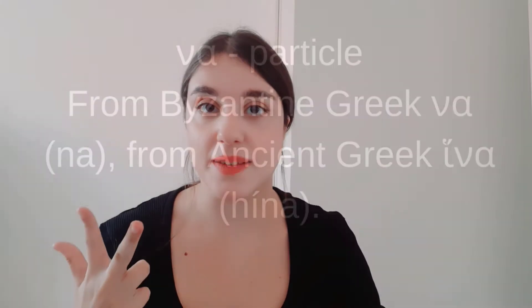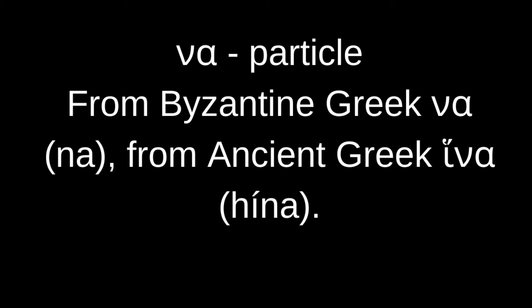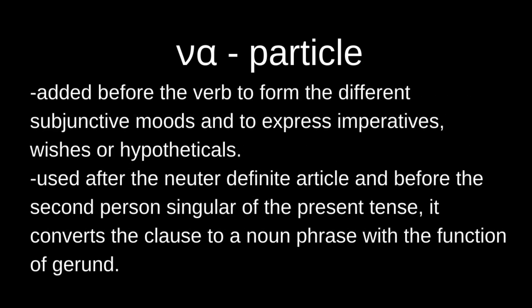These particles are ΝΑ, ΘΑ, and ΑΣ. ΝΑ, most of the times — like 99% of the times — is used before the dependent or present verb forms, meaning the verb in the present tense, to express different things: imperatives, wishes, or hypotheticals.